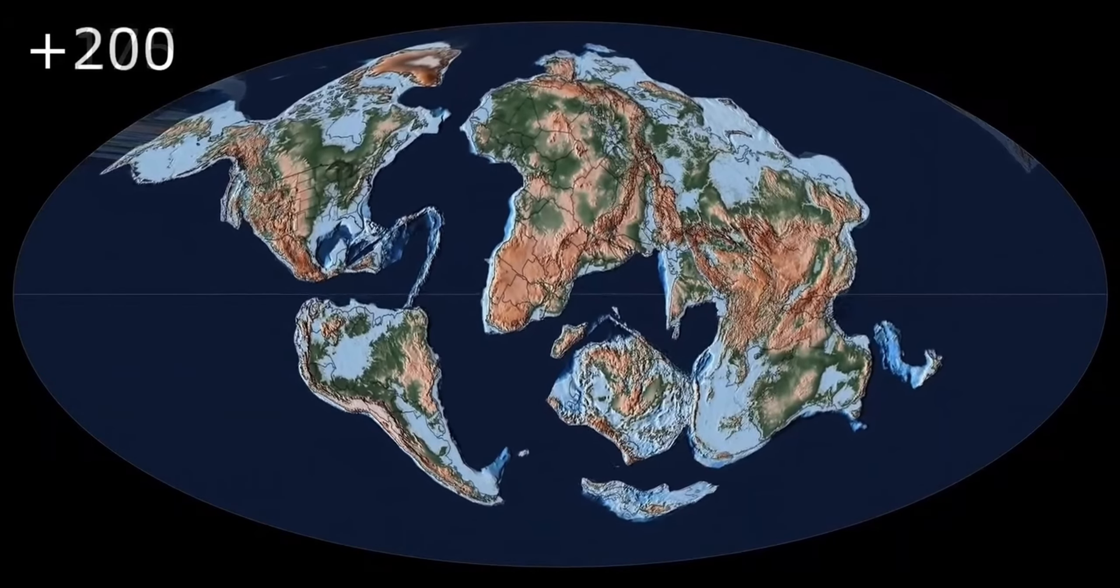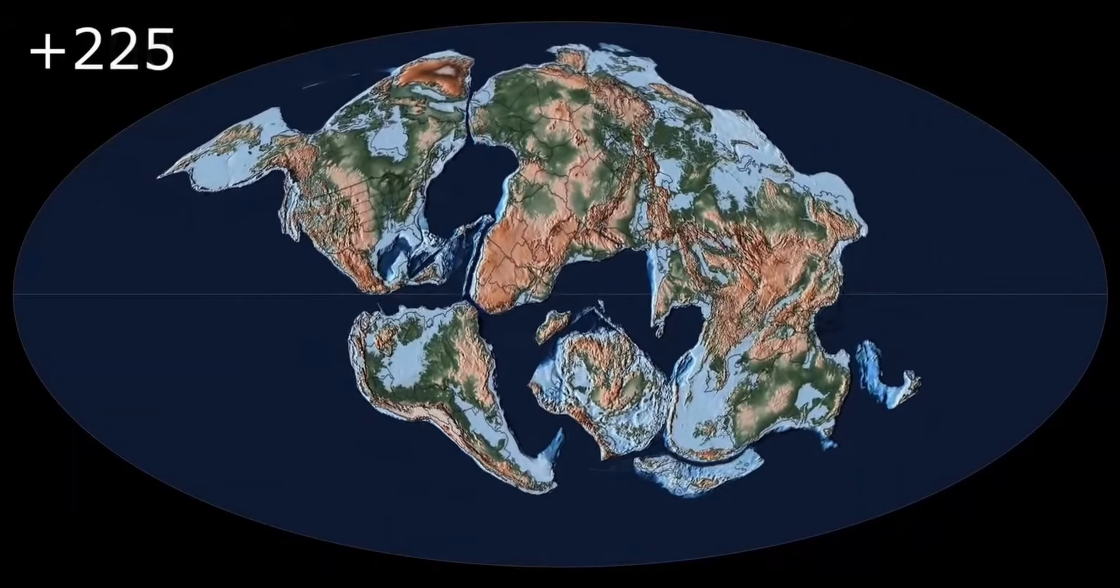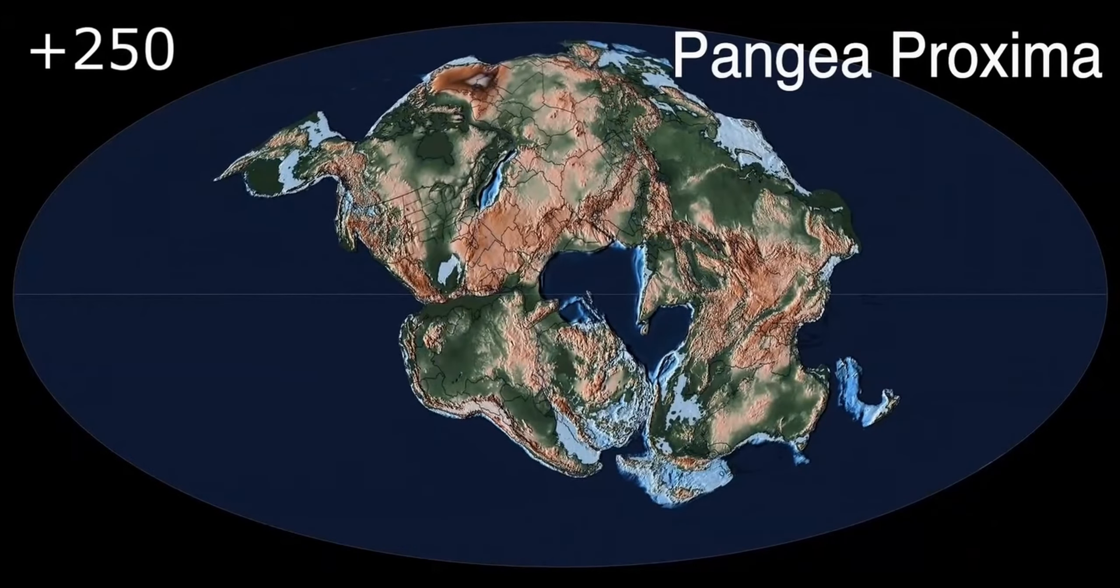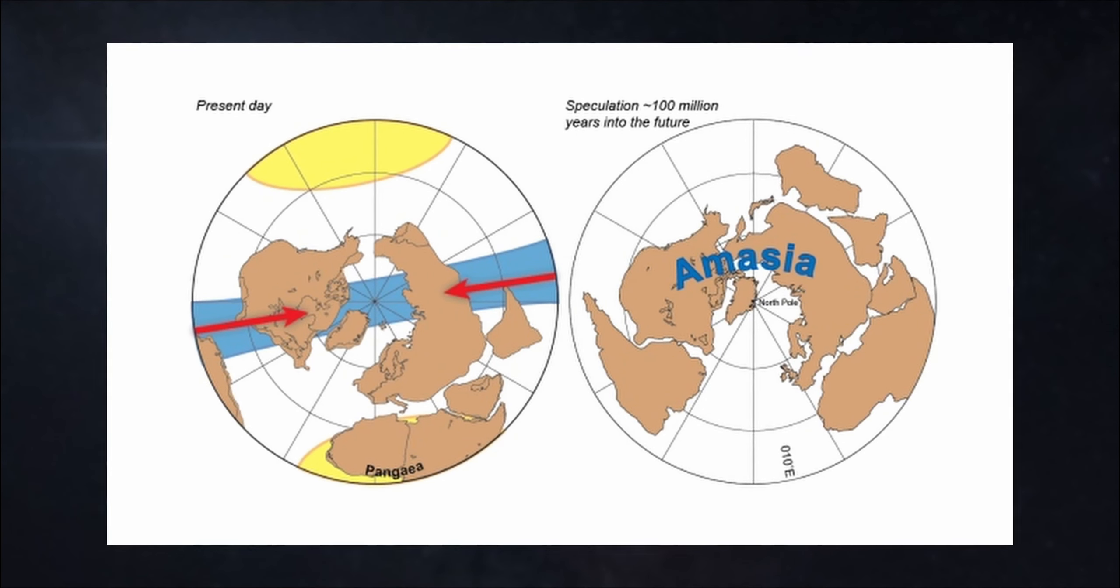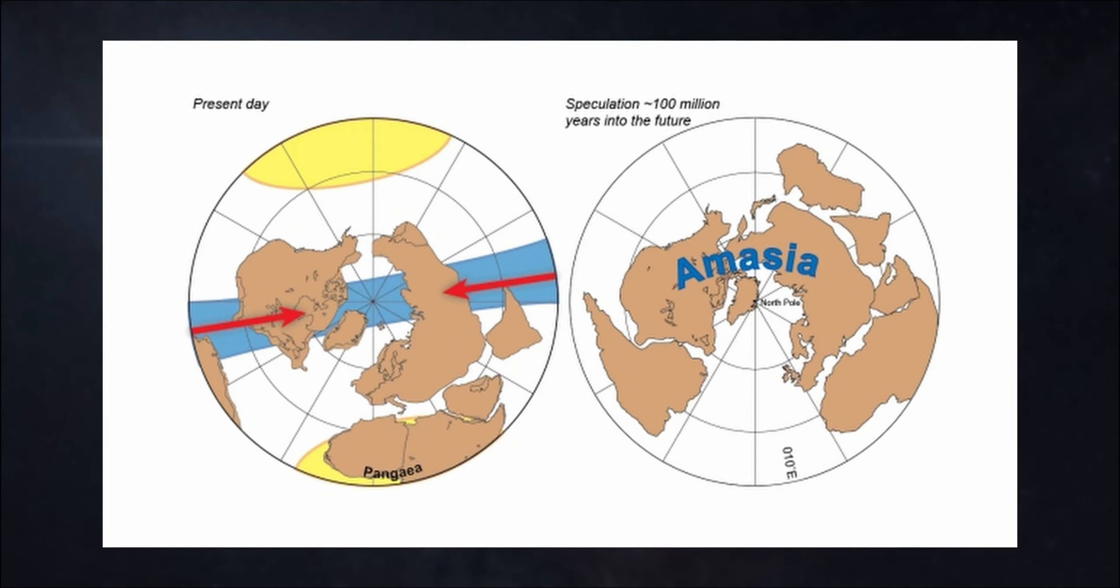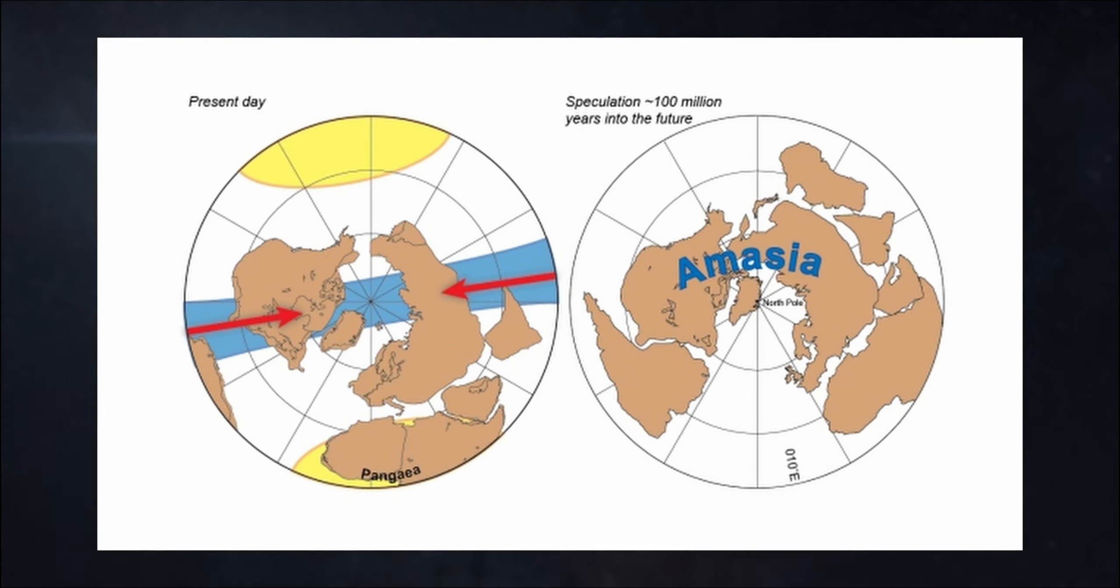And finally, in 250-300 million years, America will join the rest of the continents, form a new supercontinent. It is often called Pangea Proxima. There are alternative options, for example, Amazia. The difference in them is where exactly all this will merge together. Closer to the equator or the pole of the planet.